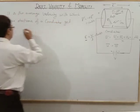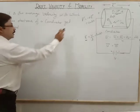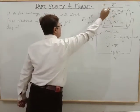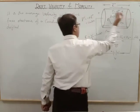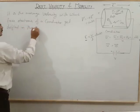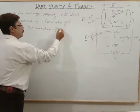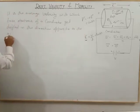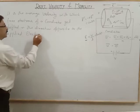Drift velocity is the average velocity with which free electrons of a conductor get drifted — opposite to the direction of the applied electric field. The direction of the electric field is from positive to negative, and the electrons drift opposite to that.